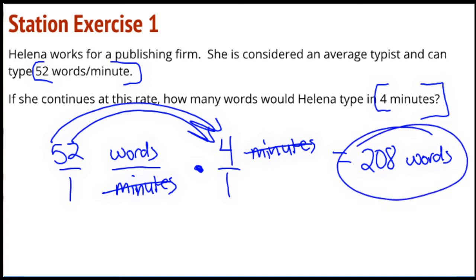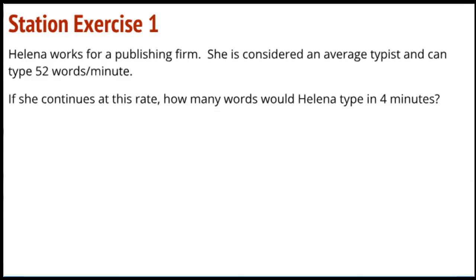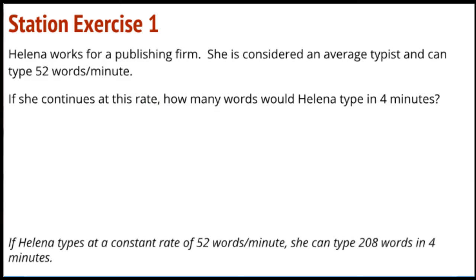I would expect you'd write a nice complete sentence answer. Once again: unit rate, rate unit, extended over a period of time. If Helena types at a constant rate of 52 words per minute, she can type 208 words in 4 minutes.